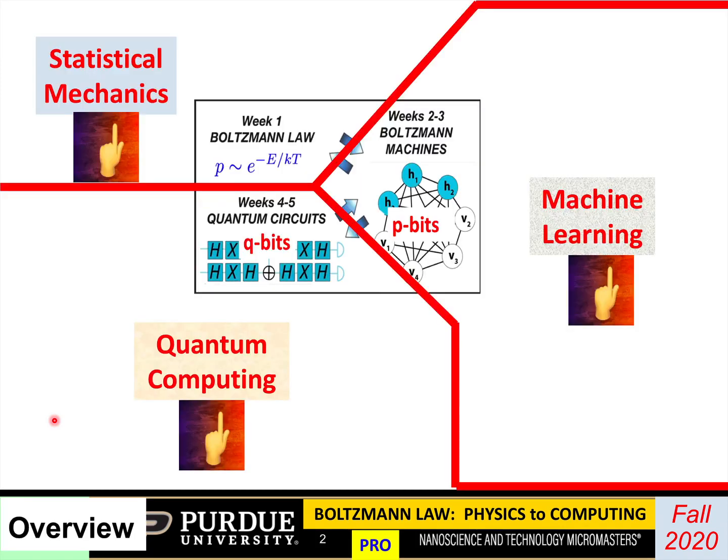The course broadly has these three segments. We start with statistical mechanics, go on to a topic that you might see in a course on machine learning, and then on to some topics that you might see in quantum computing. You might be wondering that's quite a spectrum of topics. What's common? What's the connection between all this? Well, let me try to explain.